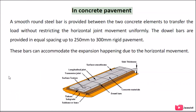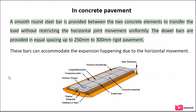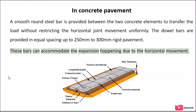In concrete pavement, a smooth round steel bar is provided between two concrete elements to transfer the load without restricting horizontal joint movement uniformly. The dowel bars are provided at equal spacing of 250mm to 300mm in rigid pavement. These bars can accommodate the expansion happening due to horizontal movement.